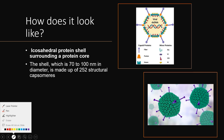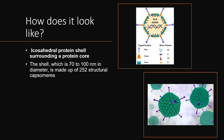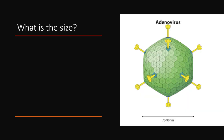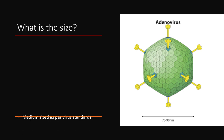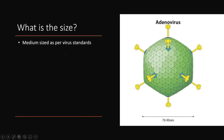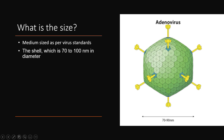The shell is built from 252 structural capsomeres — small fragments of proteins that make up the capsid. The adenovirus is a medium-sized virus by virus standards, with a shell diameter of 70 to 100 nanometers.